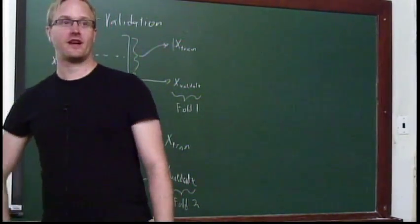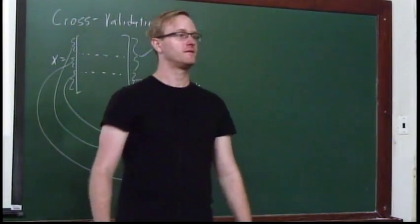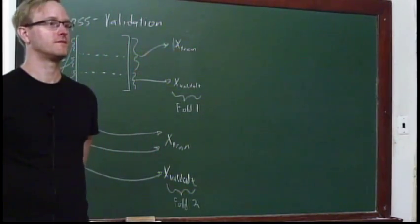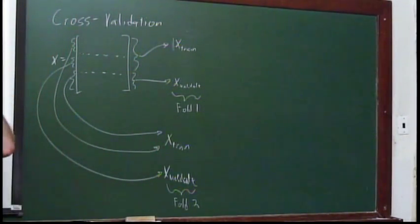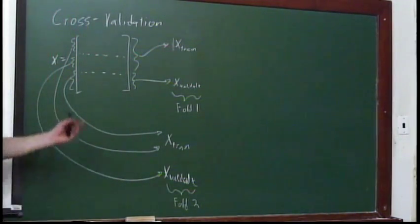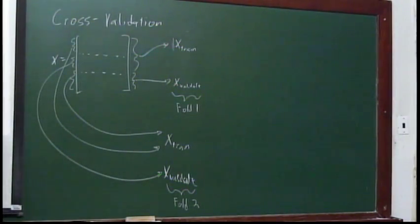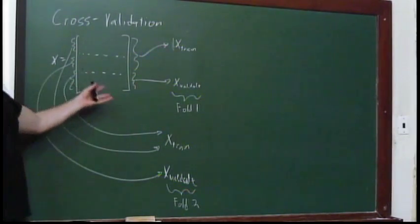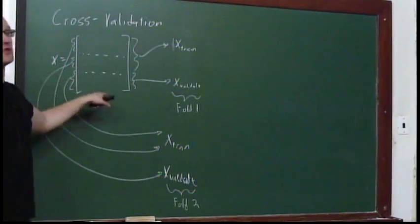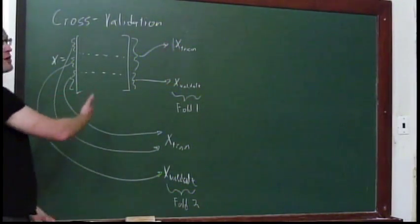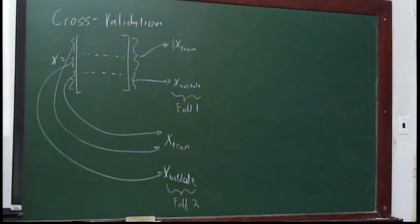Are there any comments on that before I get started? You tried three models — if you think one is better, how would you use that one? That's a good question. So what do you do now? This just gives you an estimate of the error. The standard answer is: if you're using this to choose the polynomial degree, now you've got the degree, and you might train on your full data set with the degree that you pick. This might just be used to pick a parameter like the degree or the number of features.